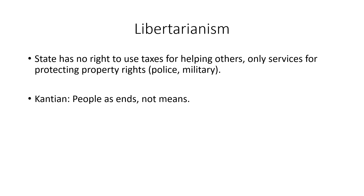Nozick said you can use your own money for charity — you could give some of your money away to help people out if you wish — but the state can't force you to do it through taxation. He takes this from the Kantian principle of treating people as ends in themselves and not as a means to an end. You can't treat people in a certain way just to get some other outcome. You've got to treat people as ends in themselves, and that's where he grounds his justification for saying you can't use taxes to help other people.